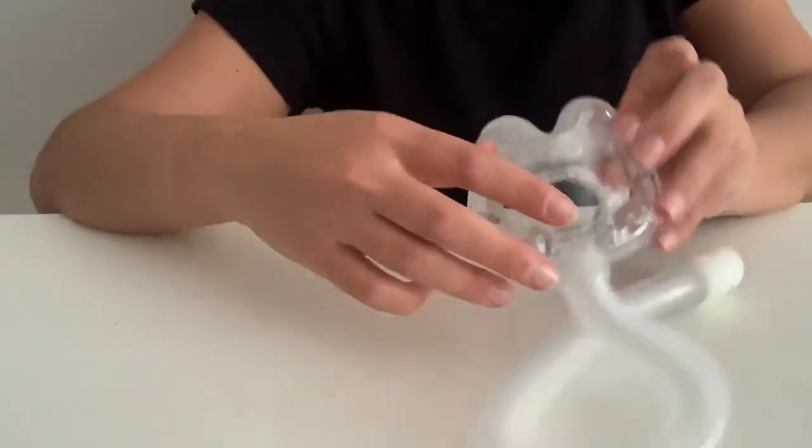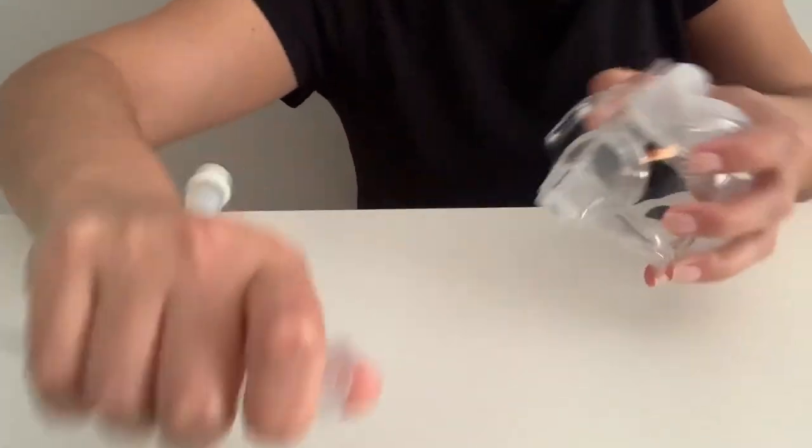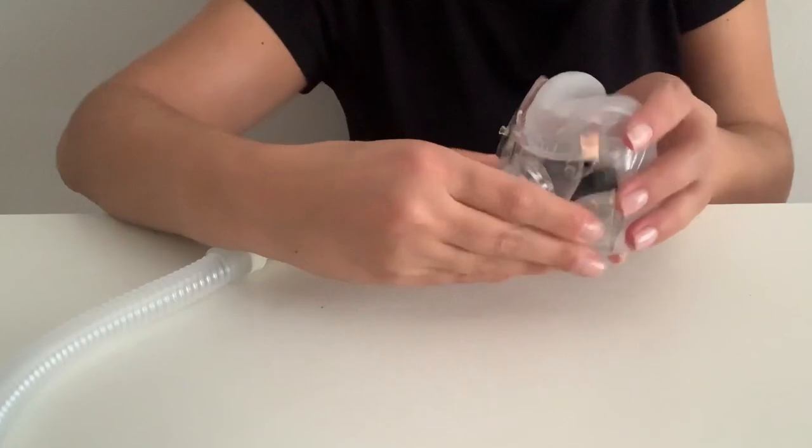Next, remove the tubing from the frame by pulling from the top of the tube. Then take the frame and push in where the head straps were to remove it from the cushion.